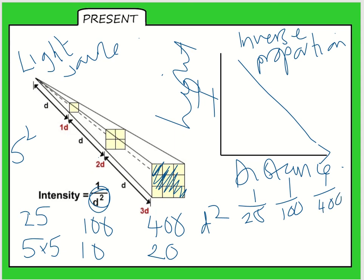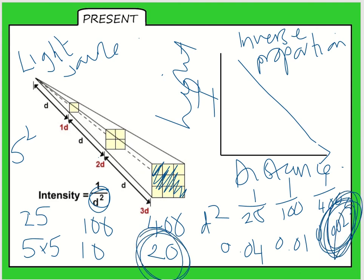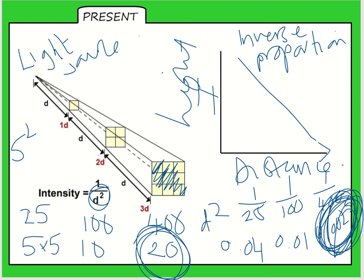1 divided by 25 is 0.04. 1 divided by 100 is 0.01. And 1 divided by 400 is 0.0025. You can see that this number here is smaller. So as the distance is increasing away from the light source, the light intensity is getting smaller, which is what that graph is showing. That's called the inverse square law, because we're using squared numbers. These are called square numbers in maths, because you can form a square with them. So the next one along would be a four by four square.